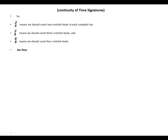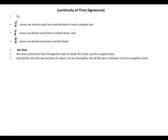Bar lines — we draw vertical bar lines through the stave to divide the music up into complete bars. Sometimes the first and last bar of a piece can be incomplete, but all the bars in between must be complete.